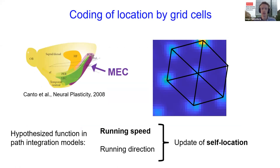Let me start with a short introduction to grid cells. Grid cells in the medial entorhinal cortex have been hypothesized to provide a metric for space. Grid cells fire at multiple locations that fall on the vertices of equilateral triangles, thus forming a hexagonal grid spanning the environment.